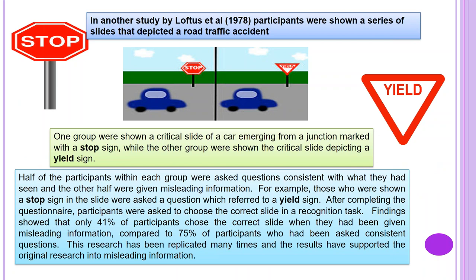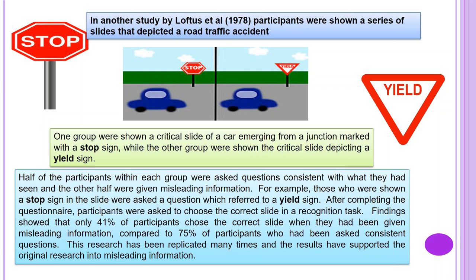In another study by Loftus et al. in 1978, participants were shown a series of slides depicting a road traffic accident. One group saw a car emerging from a junction marked with a stop sign, while the other saw a yield sign. Half of the participants in each group were asked consistent questions, and the other half were given misleading information — e.g., those shown a stop sign were asked a question referring to a yield sign. After completing the questionnaire, participants performed a recognition task. Only 41% of those given misleading information chose the correct slide, compared to 75% of those asked consistent questions. This research has been replicated many times with consistent results.